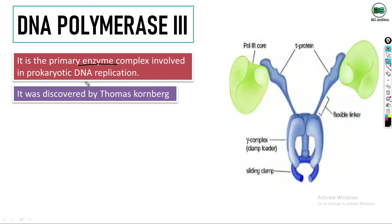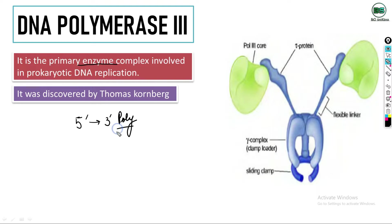DNA Polymerase 3 is the enzyme that is the main replicating enzyme inside the prokaryotes. This enzyme mainly performs 5' to 3' polymerization — this is its main function — meaning nucleotides are added to the primer.